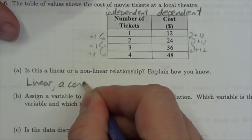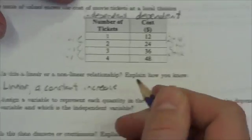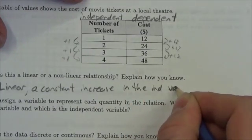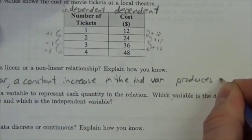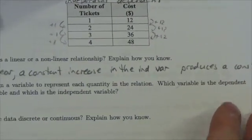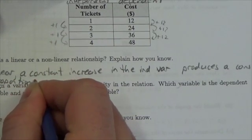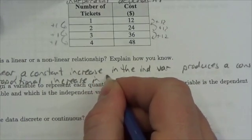A constant increase in the independent variable produces a constant proportional increase in the dependent variable.